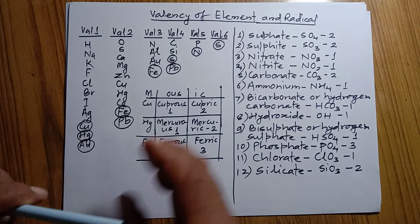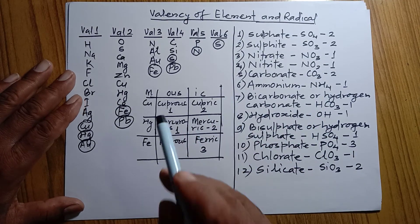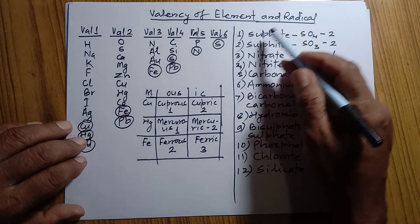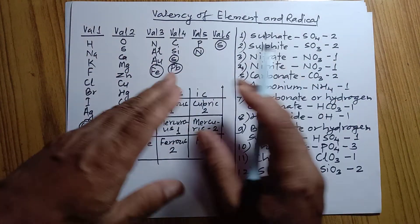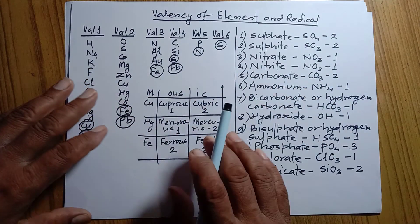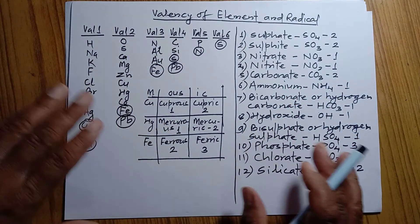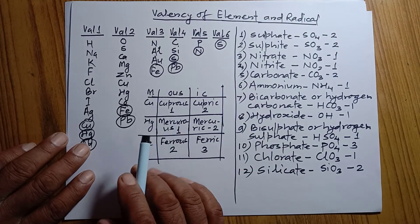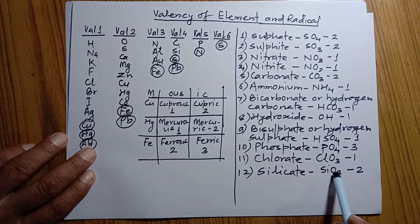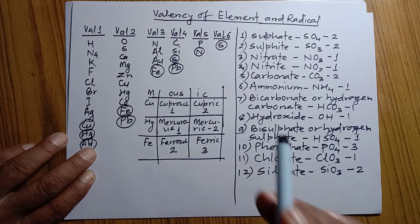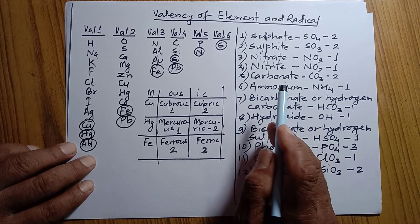These are the elements and radicals which frequently come in chemical reactions. That's why we have to remember the valency of these elements and these radicals. Then only we will be able to write molecular formulas when they combine with each other. Remember also: elements are represented by symbols, radicals are represented by formulas, and compounds are represented by molecular formulas. In the next class, we'll learn about molecular formulas and then start chemical reactions.